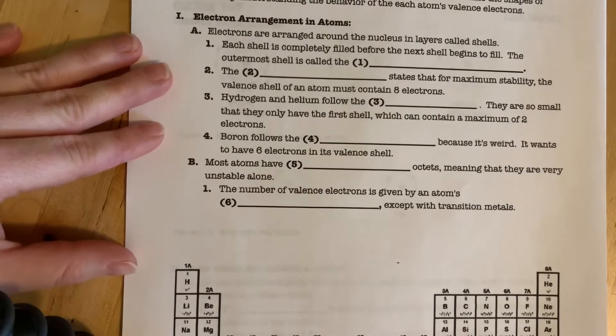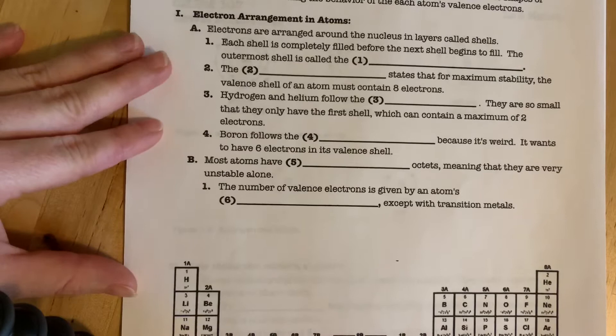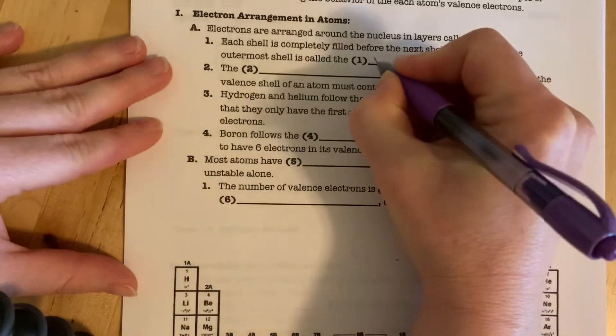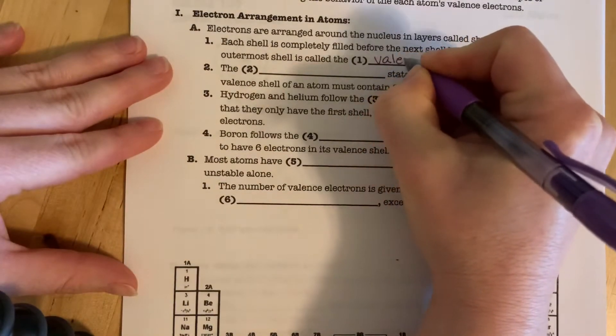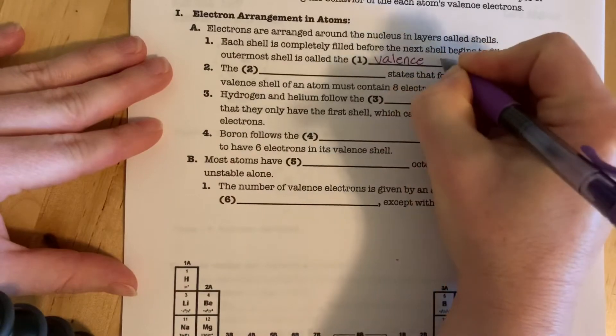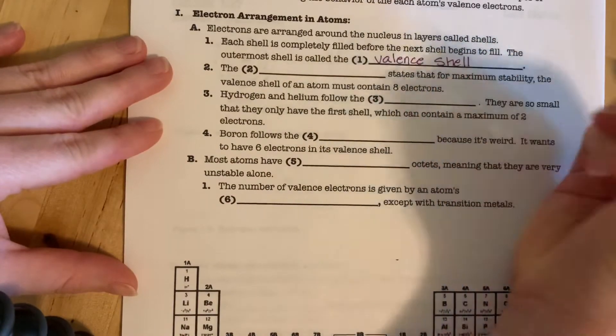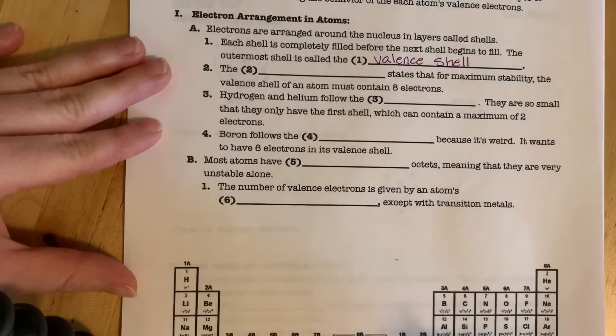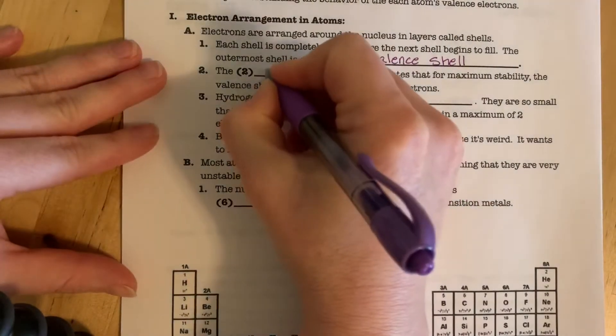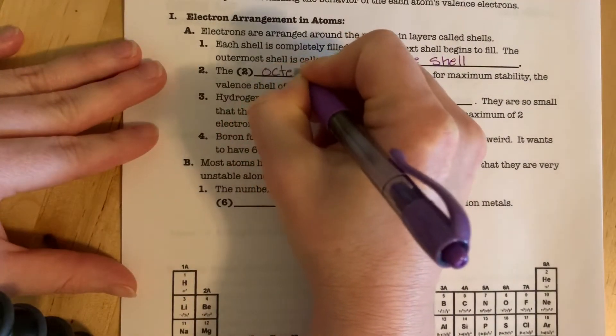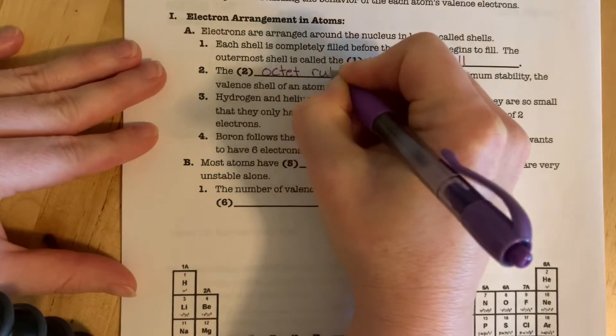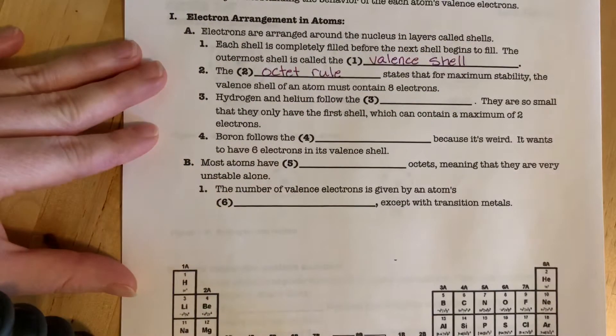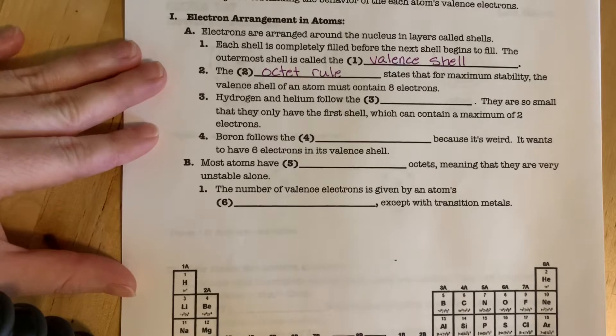So the outermost shell is the shell we're concerned with, and that's called the valence shell. With the valence shell we want to follow the octet rule, and that states that in the valence shell atoms need to have eight electrons. If they don't have eight electrons, they become very unstable.